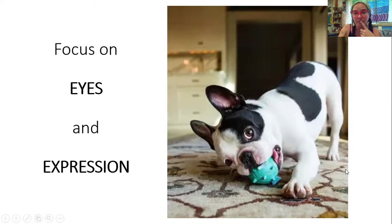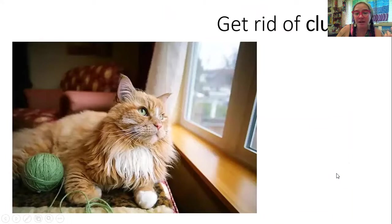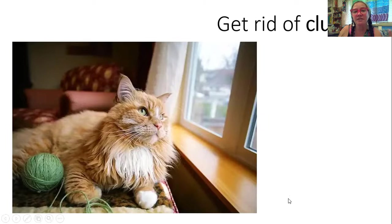Get rid of clutter. You don't want any extra stuff in the foreground or the background. If it's a prop, that's fine — but clutter, for example if you're taking a picture of your dog and he just dumped over the trash can and there's stuff everywhere, that's going to distract from the actual subject, the emphasis, the main focus, which is your pet. You want to shoot in their world — find a place where your pet is confident, happy, proud, relaxed and calm, but in their environment.